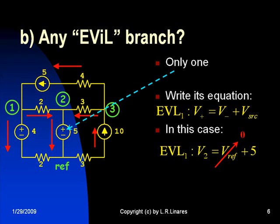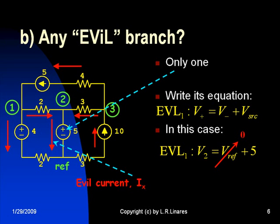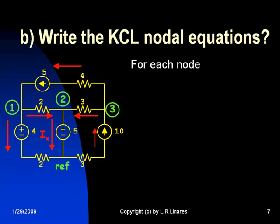That is the evil equation number one. But that evil equation includes one additional unknown, its current, the evil current Ix through the evil branch. We need to solve for that current as well. Now we write a KCL nodal equation for every node, but NOT for the reference. That KCL equation for the reference would be just a linear combination of the other three and apports no new information.